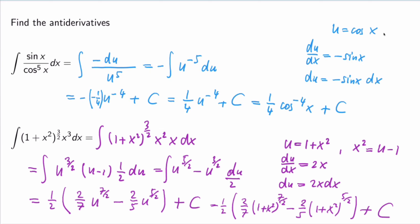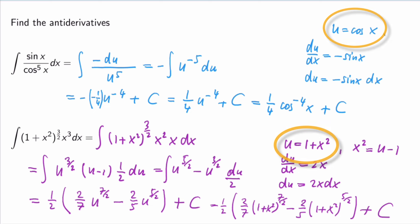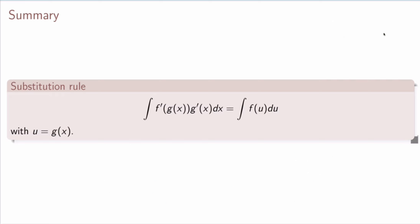That's a pretty complex example, but it demonstrates the power of the substitution rule. The key is identifying what to substitute — sometimes it's not clear and you may need two or three tries. To summarize: the substitution rule undoes the chain rule. We integrate functions of the form f′(g(x))·g′(x) using the substitution u = g(x), reducing it to ∫f′(u) du, which is often easy to solve.